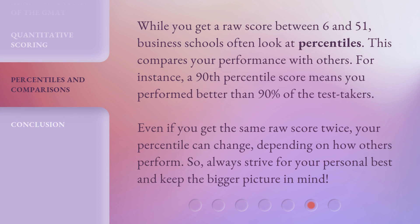While you get a raw score between 6 and 51, business schools often look at percentiles. This compares your performance with others. For instance, a 90th percentile score means you performed better than 90% of the test takers.